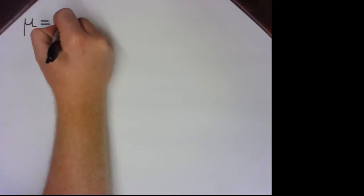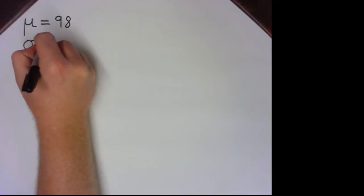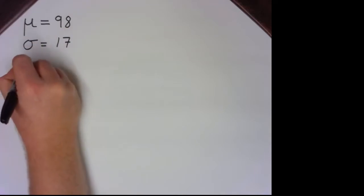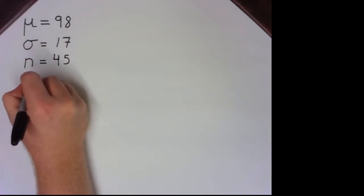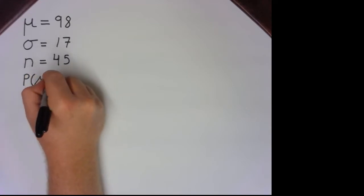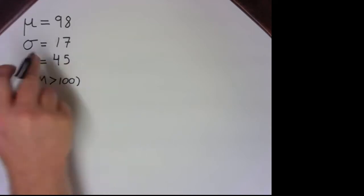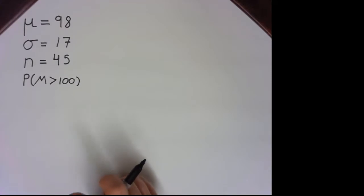Now let's say we were given this same problem, but not broken up into nice little chunks. So the population mean now is 98, the standard deviation of the population is 17, we're working with sample sizes with an n of 45, and you have to figure out what is the probability of getting a sample mean greater than 100.